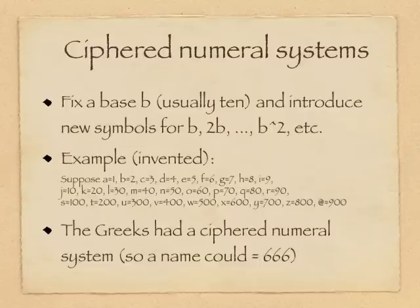In this case, you have a particular base, usually ten. And you have symbols for one, two, three, and so on. And then new symbols for the base, twice the base, three times the base, and so on. And new symbols then for the base squared, twice the base squared, etc.